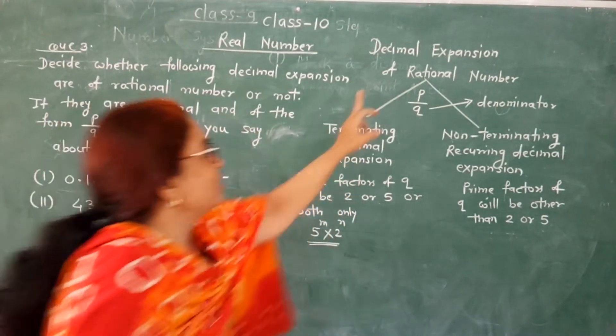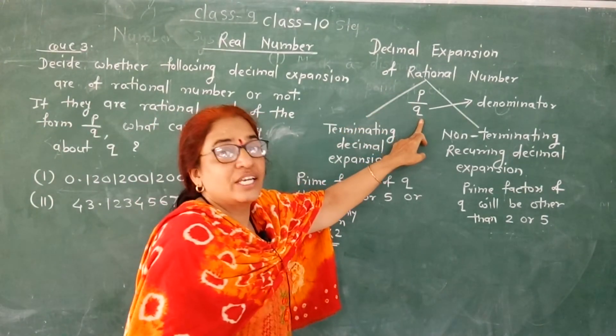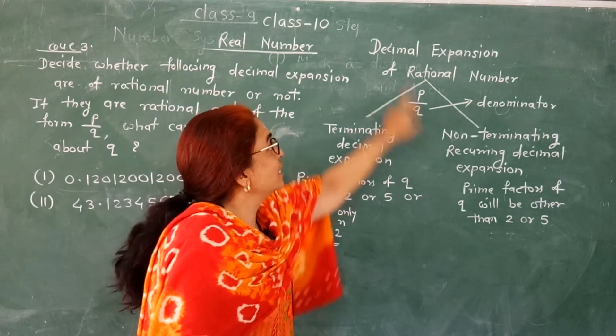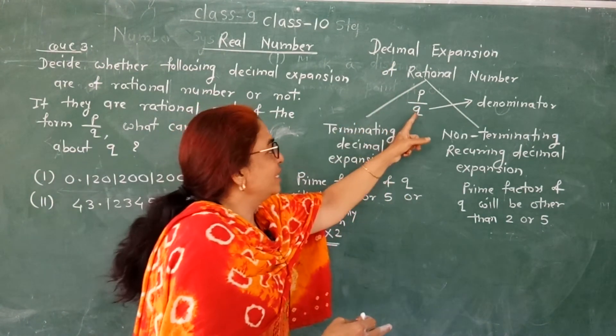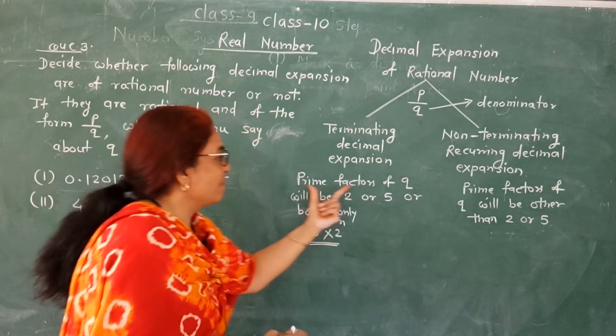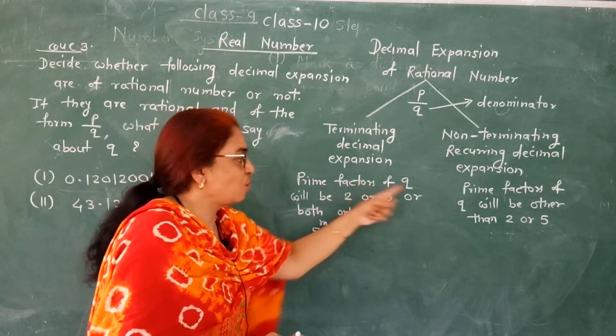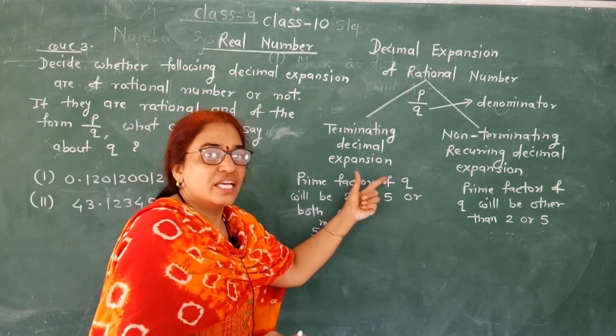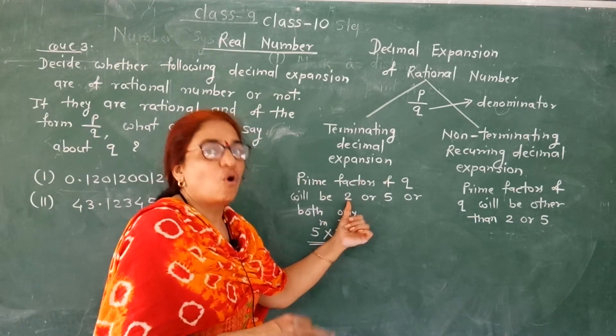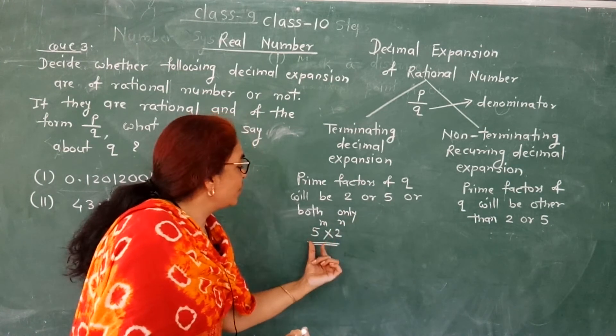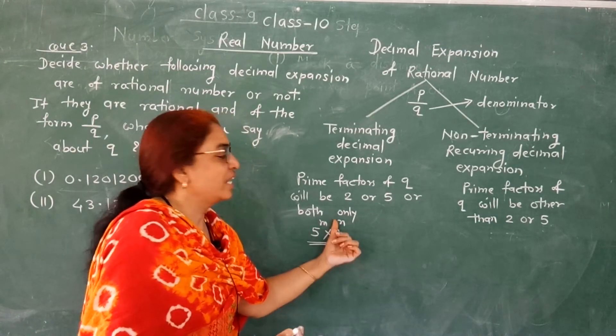Now some important points. The rational number's denominator depends on the decimal expansion. The denominator prime factors of q - the prime factors of q is in the form of 2 to the power m into 5 to the power n.